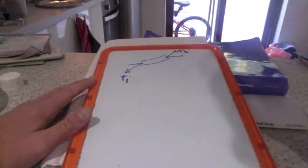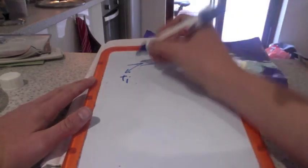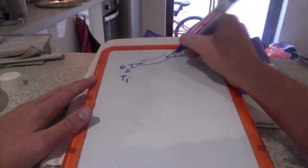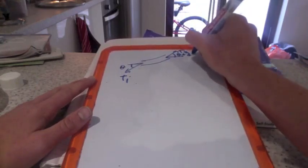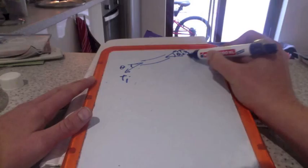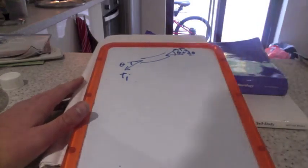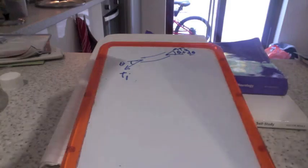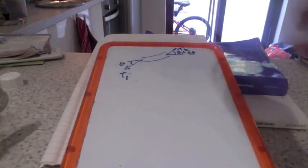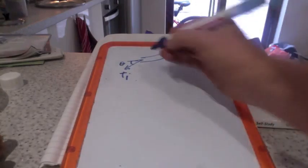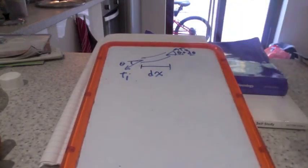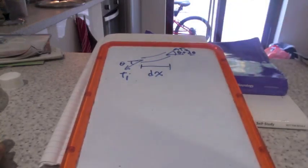I call this angle theta, this angle theta plus d-theta. I call this d-theta because it's a really small, tiny section of the wave—infinitesimally small. It's a small change in theta, and similarly, I call this dx.